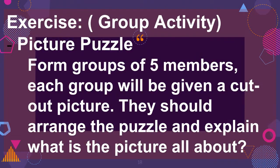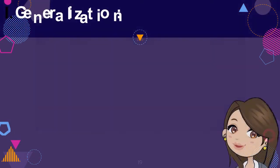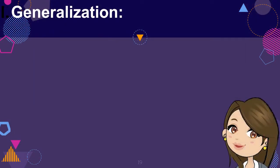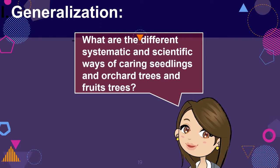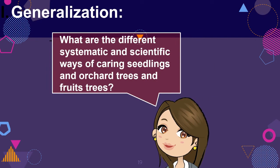Exercise — Group Activity: Picture Puzzle. Form groups of five members. Each group will be given a cut-out picture; they should arrange the puzzle and explain what the picture is all about. Generalization: What are the different systematic and scientific ways of carrying seedlings and orchard trees and fruit trees?